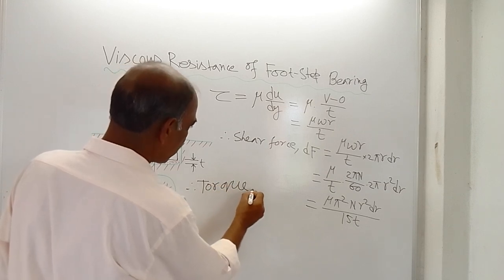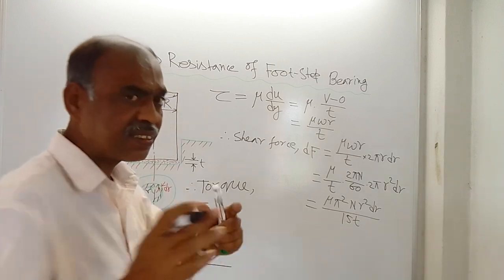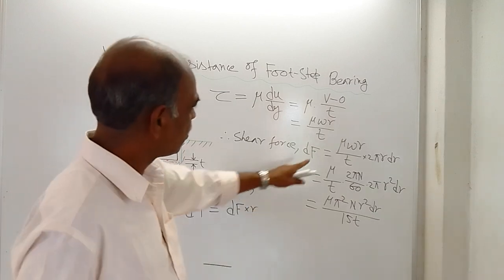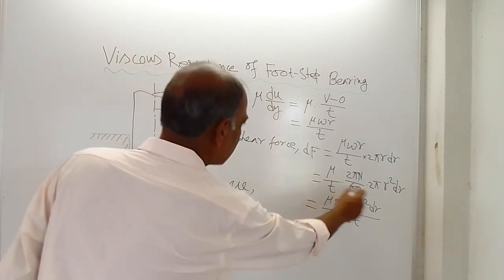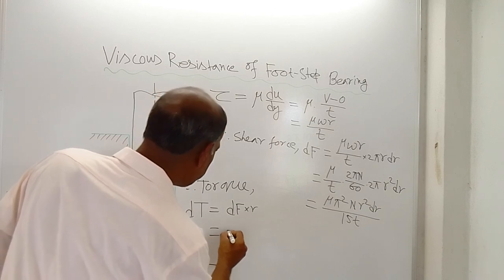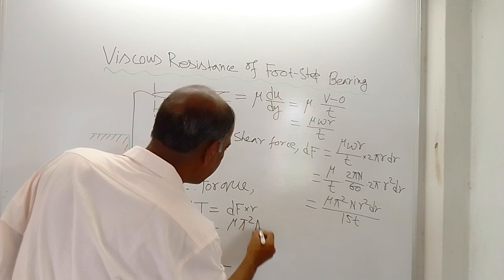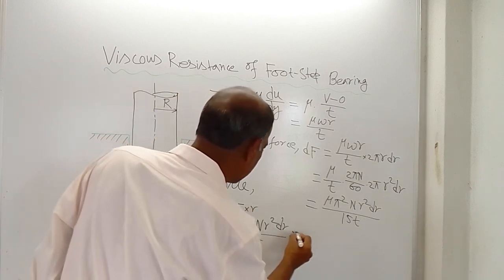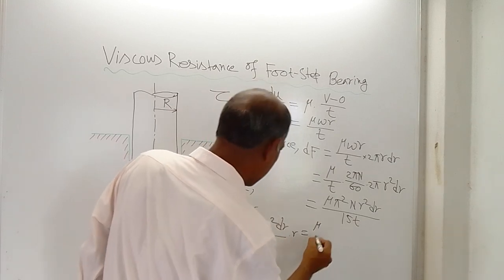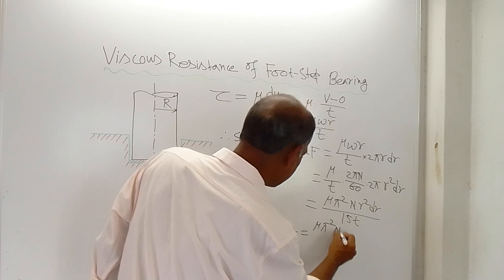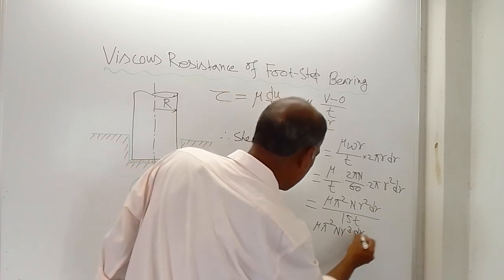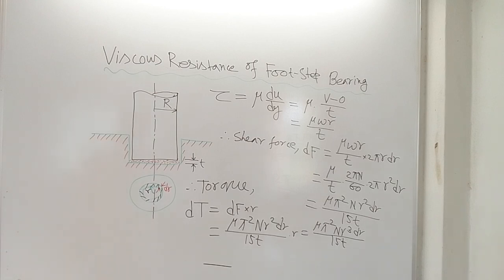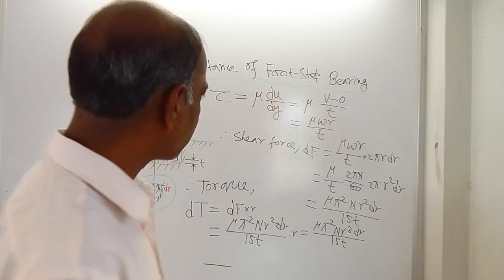Torque, denoted by dt because this is for the ring element, is equal to df multiplied by r. This df shear force multiplied by r. So what is df? What you will get: μ π² n r² dr divided by 15 × t, and then this r. So what is the result? You just get cube of r. Then n, then r³, then this dr, and then this 15. This is torque for the ring element.